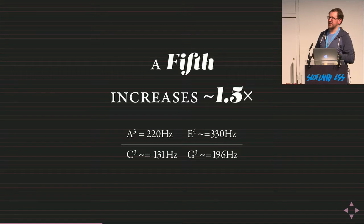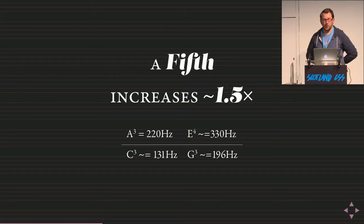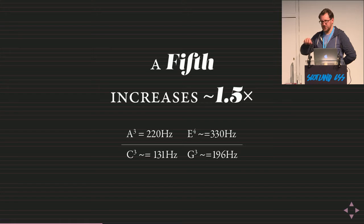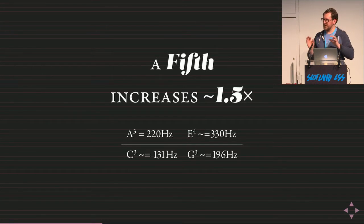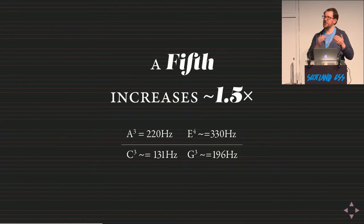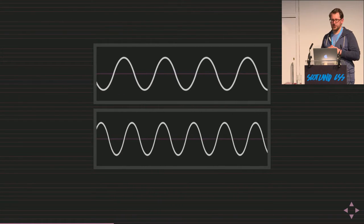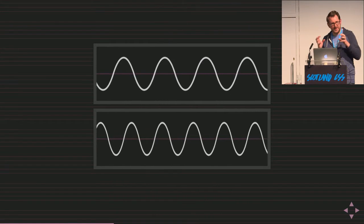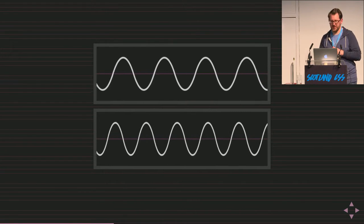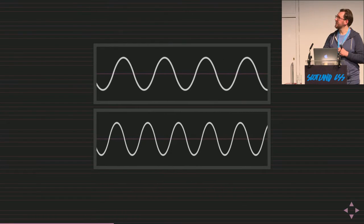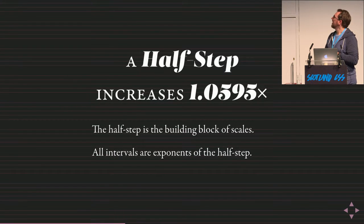A fifth is another common musical interval — A to E, or C to G — and it is 1.5 times the original frequency. Going up a fifth on a piano is five notes away; the pitch is exactly one and a half times the original note. Divide by 1.5 to go down the same interval. Visualized as two waves, the lower one is only 1.5 times as tightly packed — up a fifth musically.